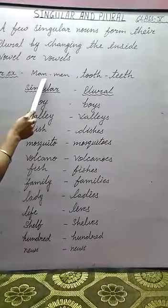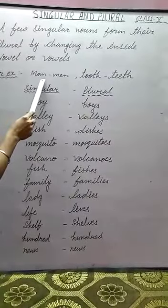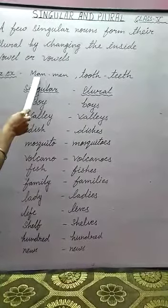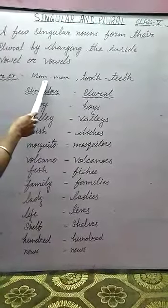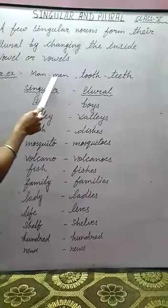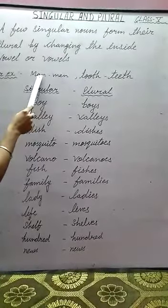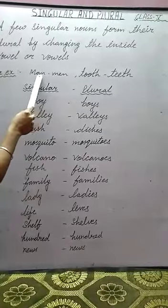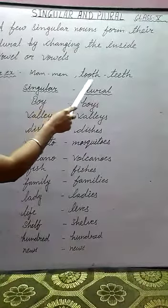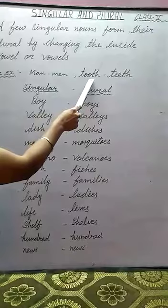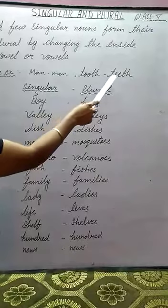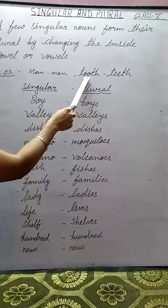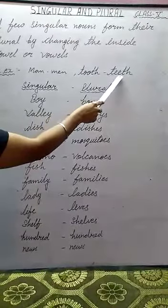For example, 'man.' Here we can see that 'a' is a vowel which comes in between the word. So to make its plural, we change 'a' to 'e' and make the plural of 'man' to 'men.' In the same way, next is 'tooth.' The plural of 'tooth' is 'teeth.' Here, we change the vowel 'o' to vowel 'e.'